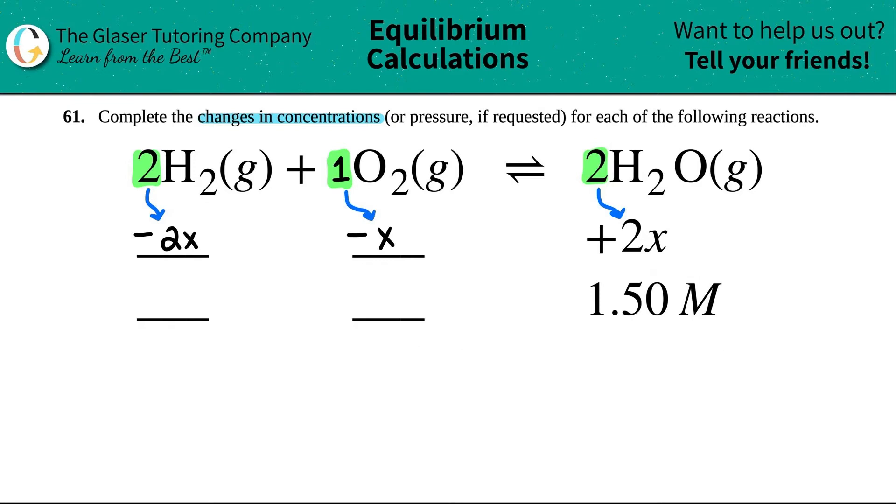Now we just got to figure out what the actual number is. They told us that 2X collectively equaled 1.50 molarity. Now notice here, this was plus 2X and this is minus 2X. So it seems like the total amount for H2 gas would be the same for the H2O gas, but just a negative value because they have the same ratio.